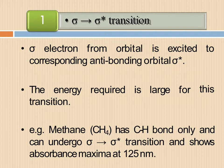First we discuss the sigma to sigma star transition. The sigma electrons from bonding orbital are excited to corresponding anti-bonding orbital sigma star. The energy required is large for this transition. Those compounds which possess sigma electrons show such type of transition. In a molecule, sigma electrons are tightly bonded with the atoms, so more energy is required for such transition.